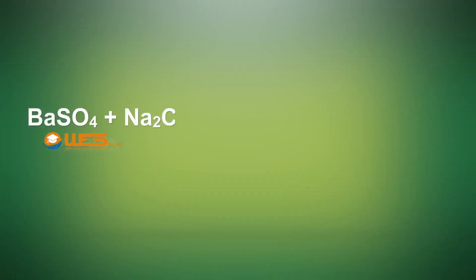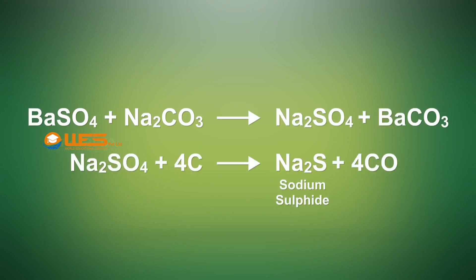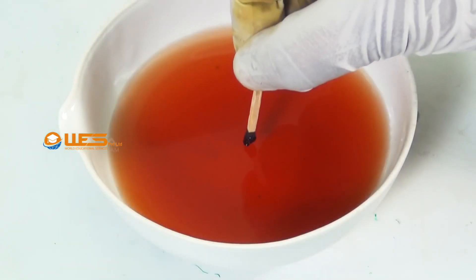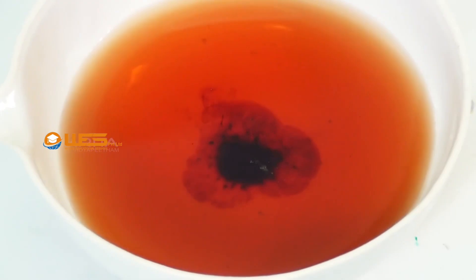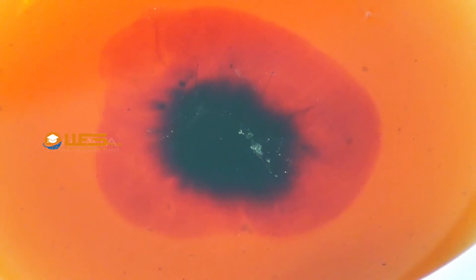Sulphate reacts with sodium carbonate and charcoal to form a fused mass of sodium sulphide. Now dip the fused mass into sodium nitroprusside solution taken in the china dish. Sodium sulphide reacts with sodium nitroprusside to form a purple coloured iron complex which appears as violet streaks.